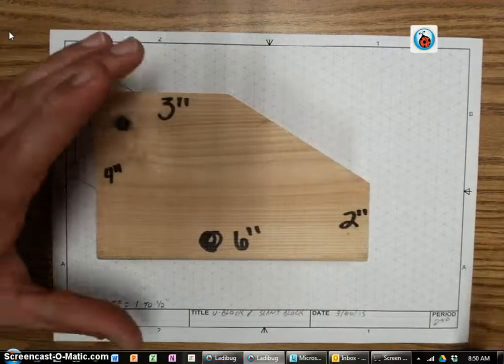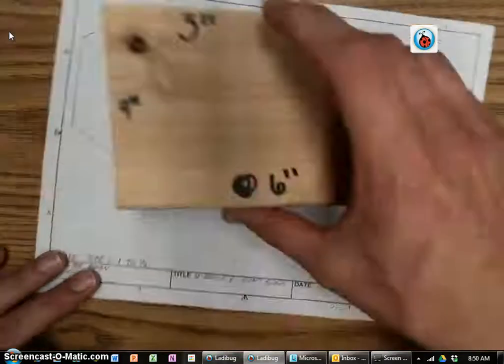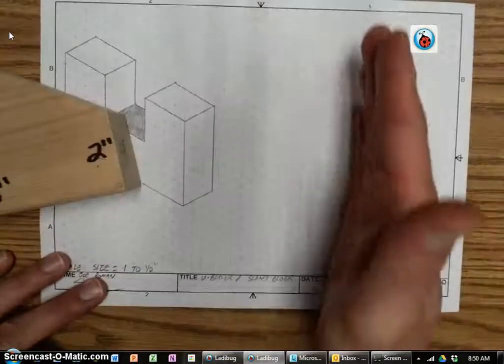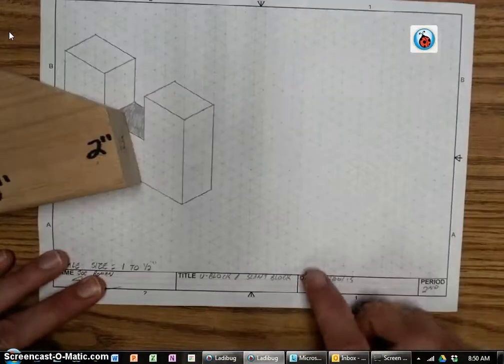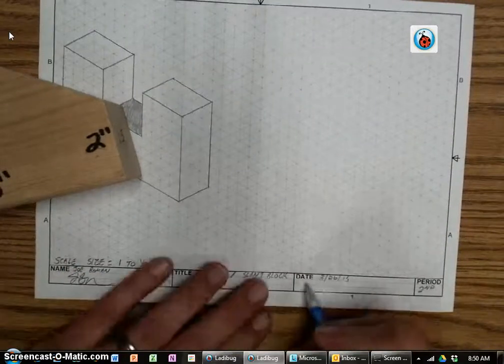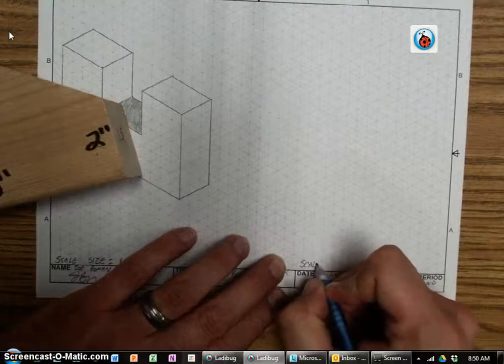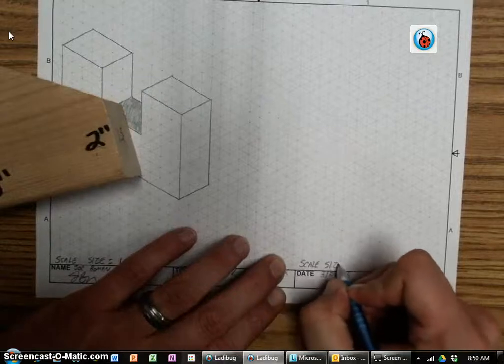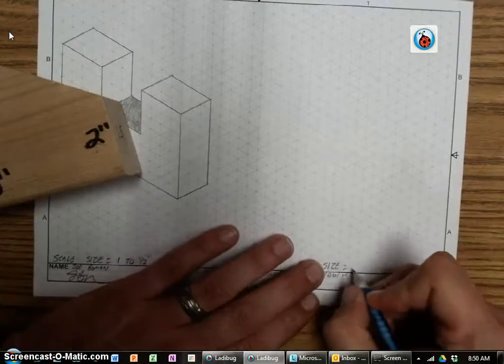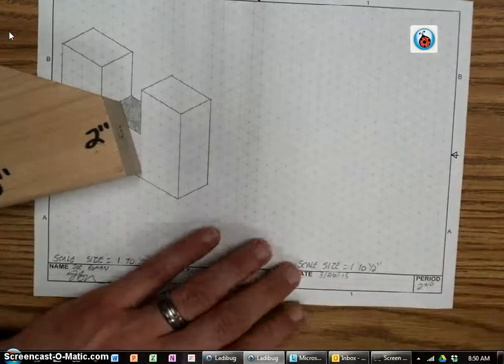We're going to use the same scale size for this shape. So because this shape right here, our slant block, is going to go on the right side of our paper, we're going to put our scale size right above our date right here, so that way people know. So above the date, we're going to write scale size, in all caps, equals 1 to 1⁄2 inch. We're going to stick with that same scale size for a little while.